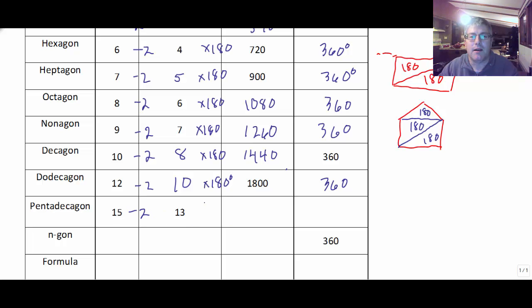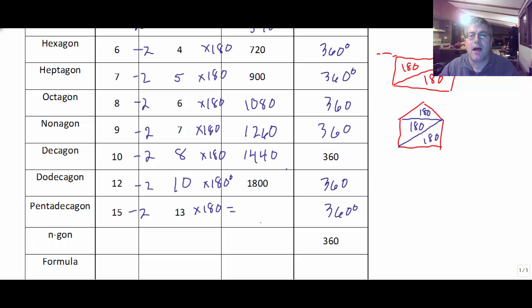And the pentadecagon, a 15-sided figure, has 13 triangles times 180. I will let you figure that one out — you can bring that to class.